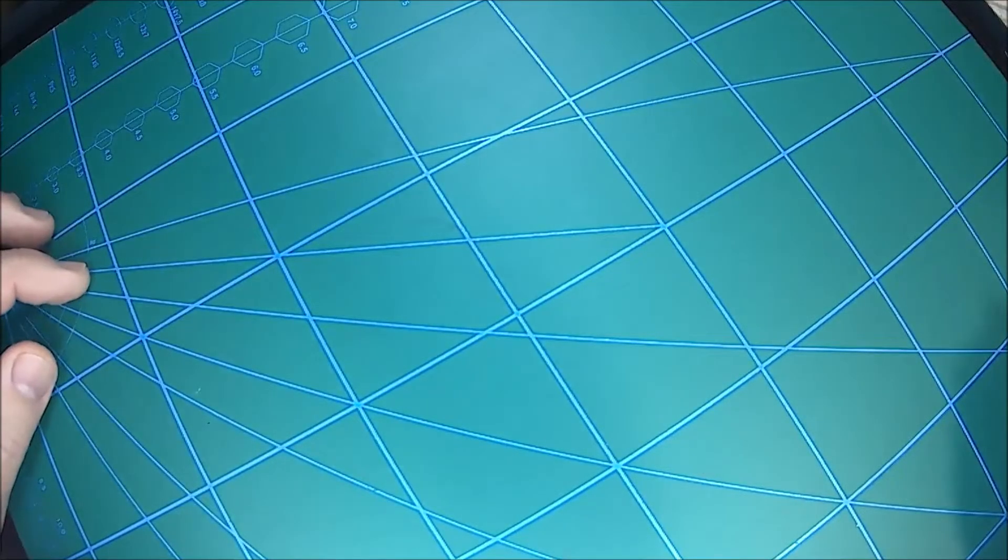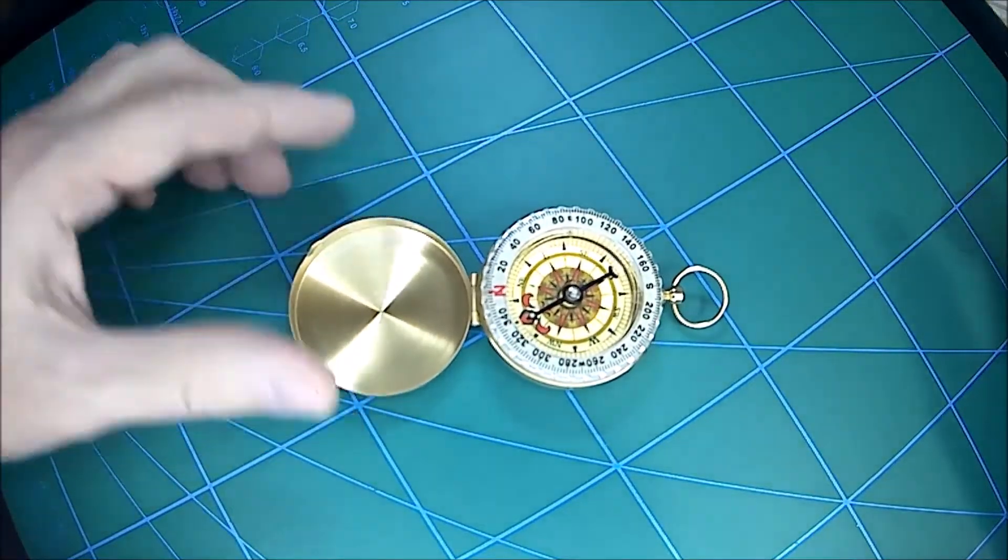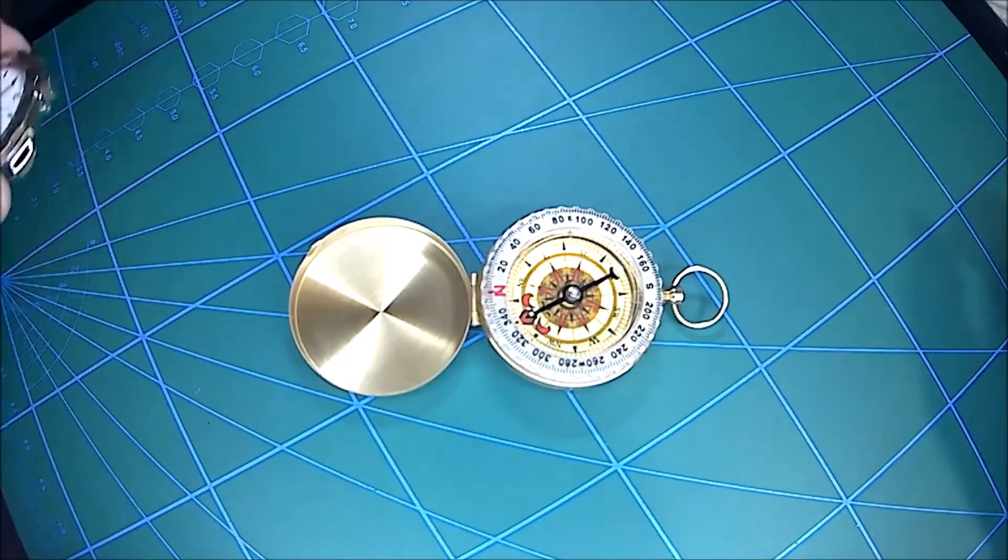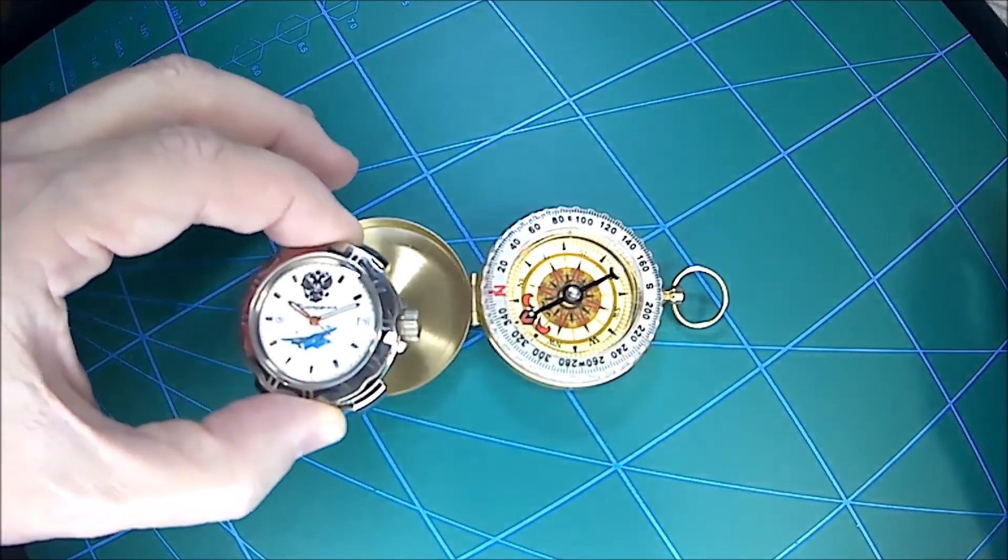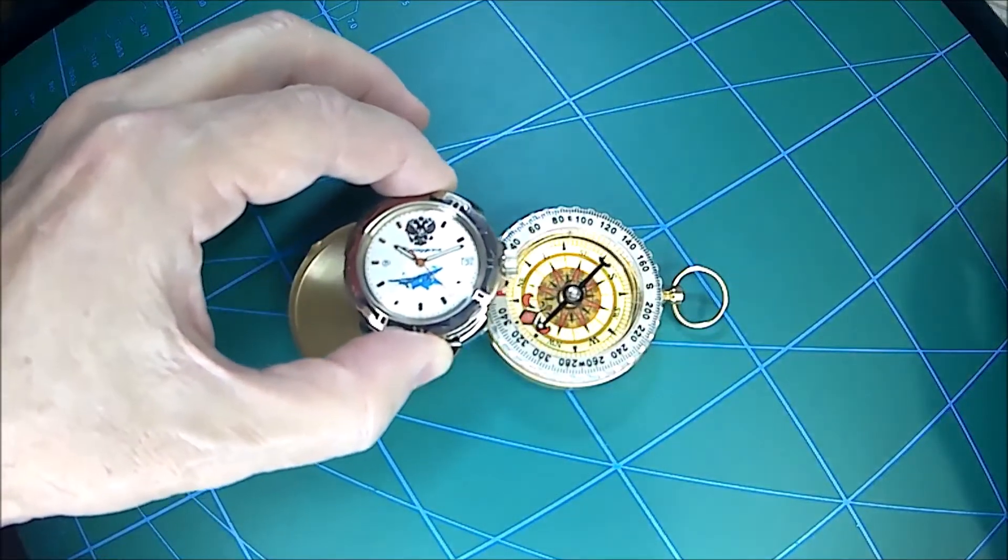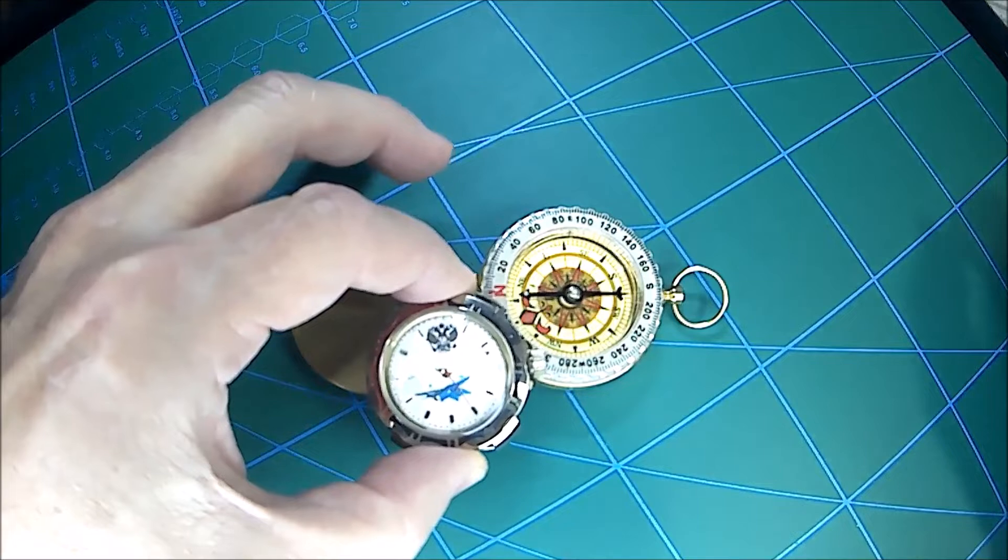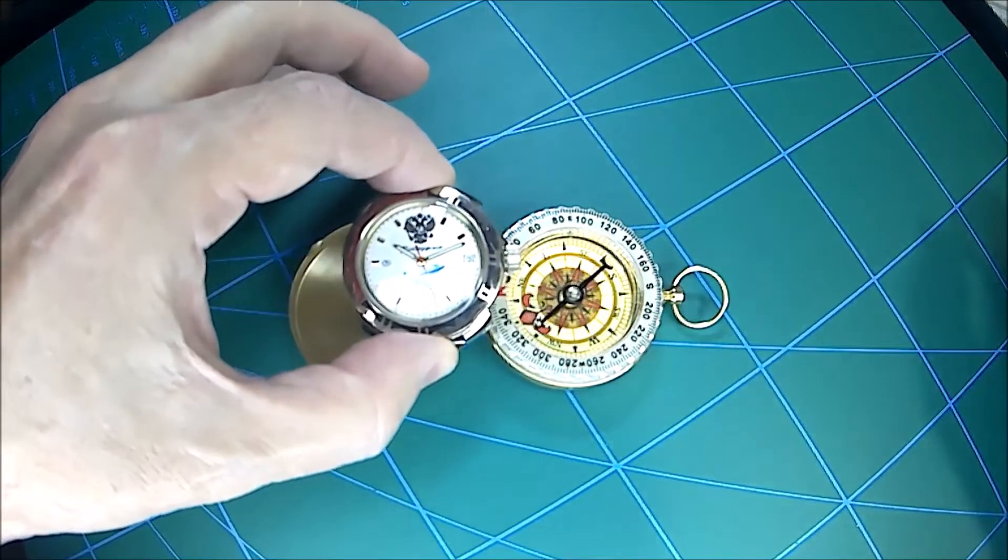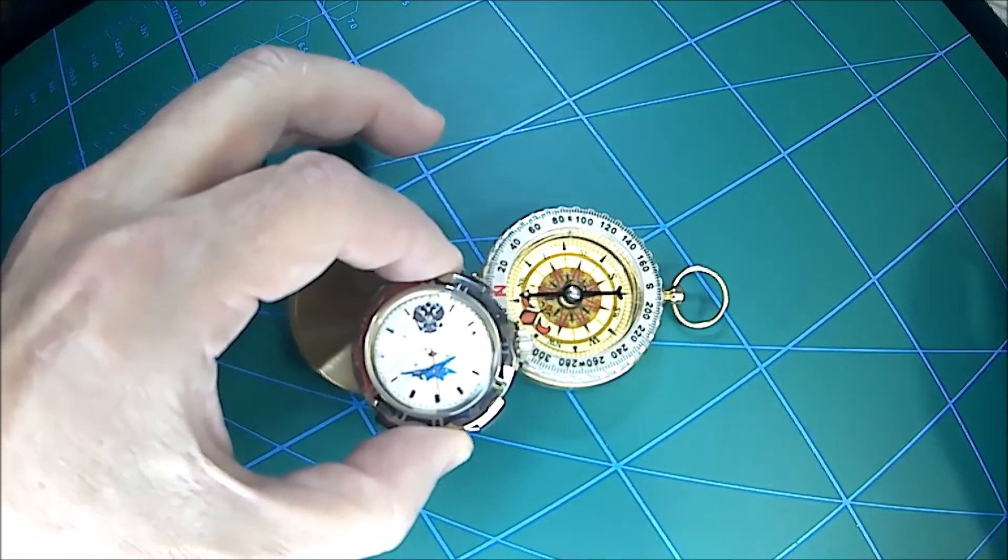Now firstly, you want to check to make sure that the movement is actually magnetized. So I use a compass which is purchased from Amazon rather cheaply, and then you just wave the watch next to the needle and look for any significant deflection. As you can see, this watch is magnetized.